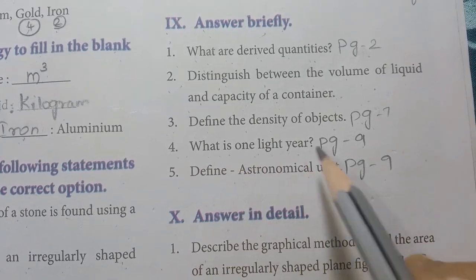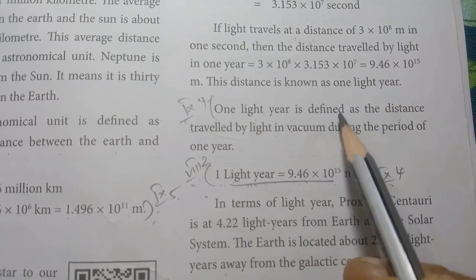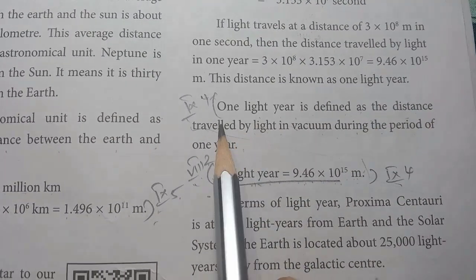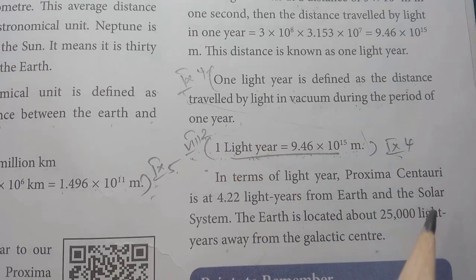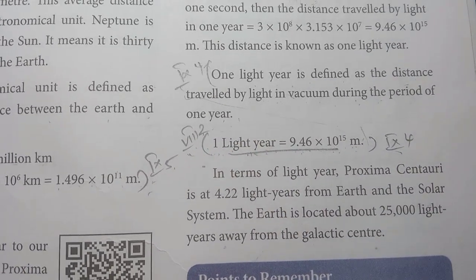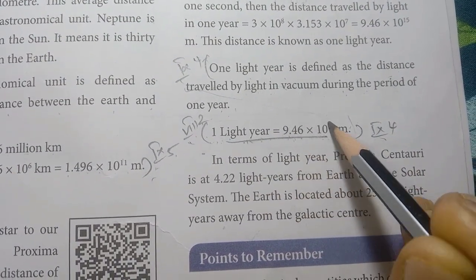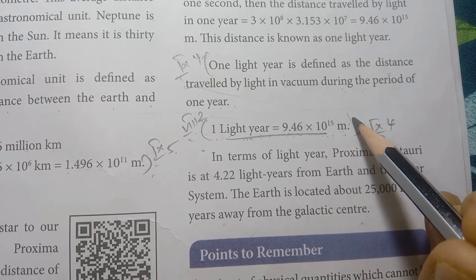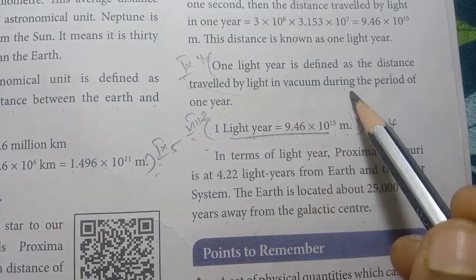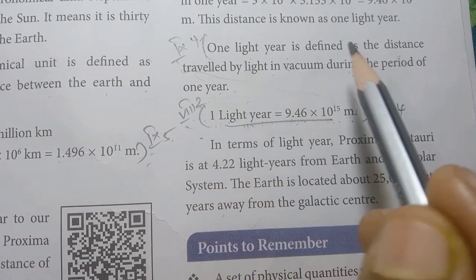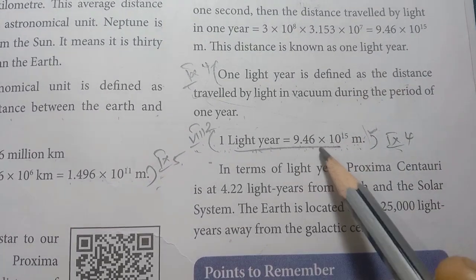Fourth: what is 1 light year? Page number 9. One light year is defined as the distance traveled by light in vacuum during the period of 1 year. One light year equals 9.46 into 10 power 15 meters. In the definition, do not miss any word; also write down the value.